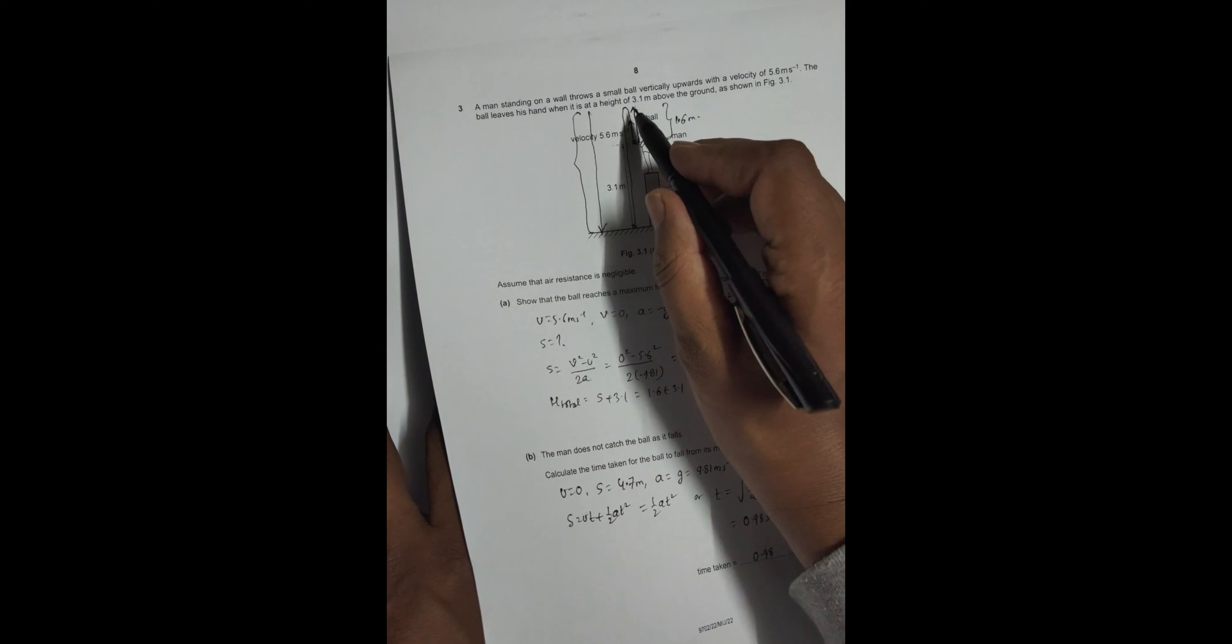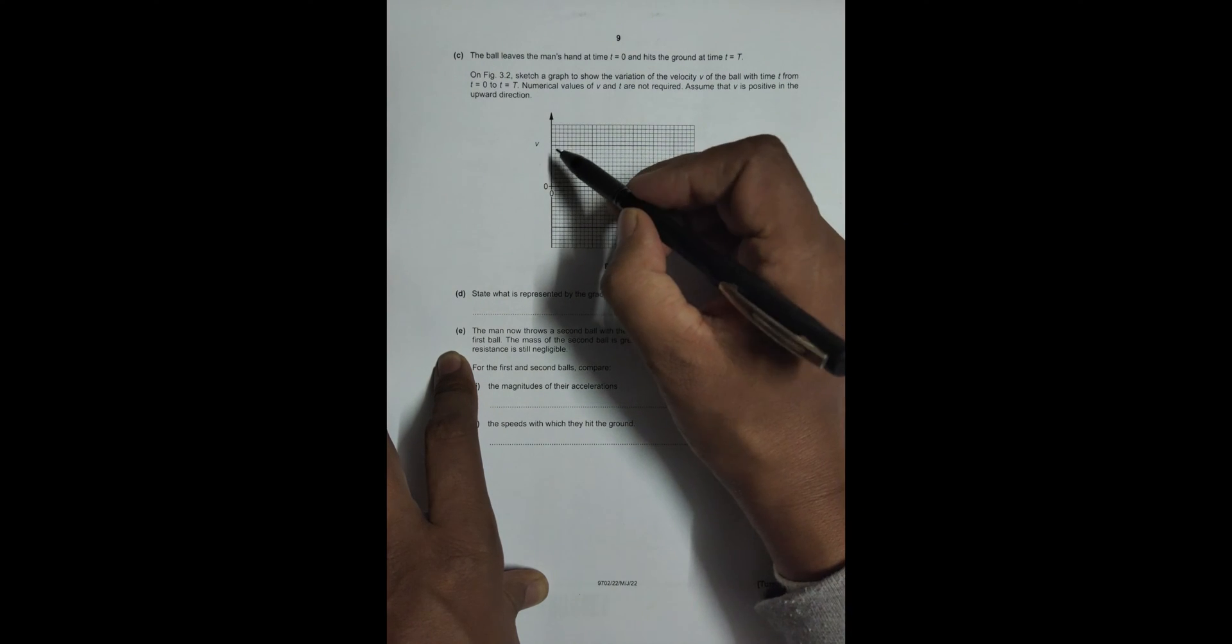Assume that velocity is positive in the upward direction. So what they have said is the upward velocity is positive and downward is negative. The upward velocity was 5.6 meters per second. So let me take a little idea. What I must have is initially the velocity should be here and it must come like this.